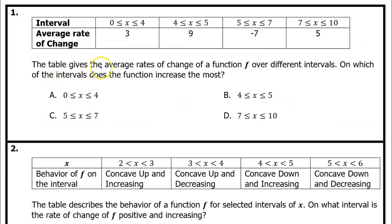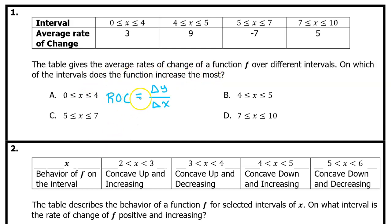Number 1. The table gives the average rates of change of a function f over different intervals. On which of the intervals does the function increase the most? The rate of change over an interval is just the slope of the segment from the beginning of the interval to the end of the interval. That means the rate of change will be the change in y divided by the change in x.